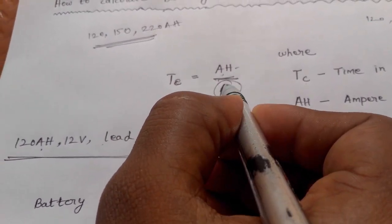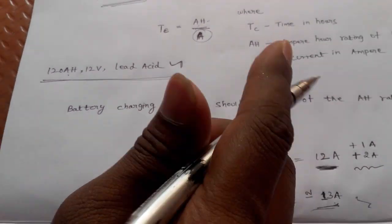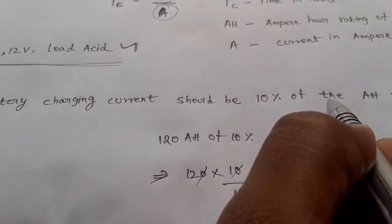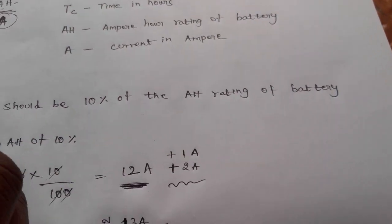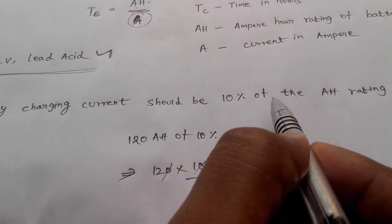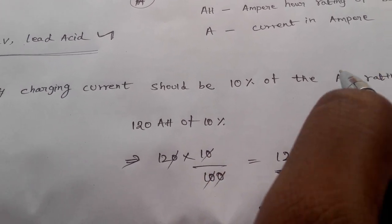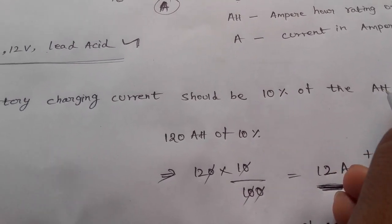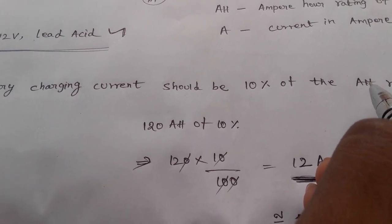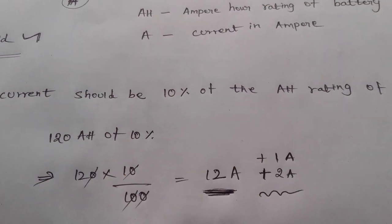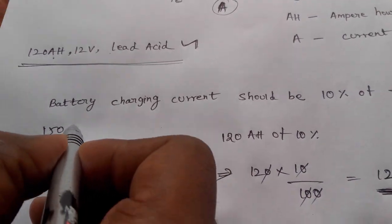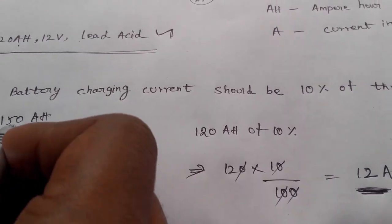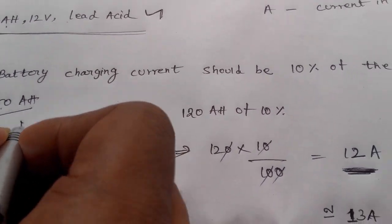This is a general formula. The battery charging current should be 10% of the Ah rating of the battery.